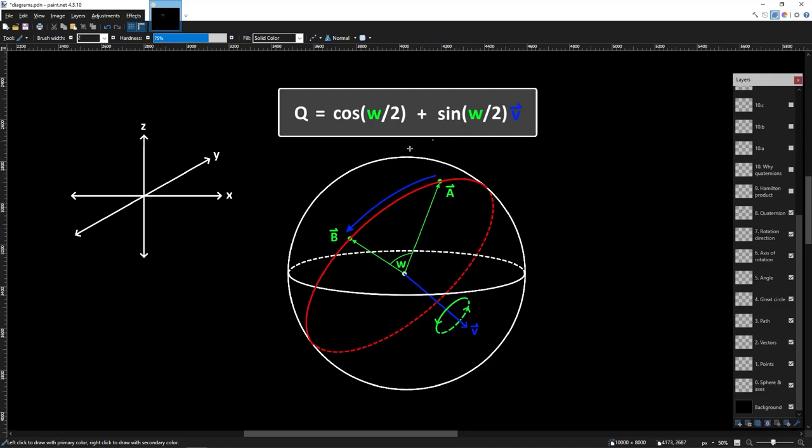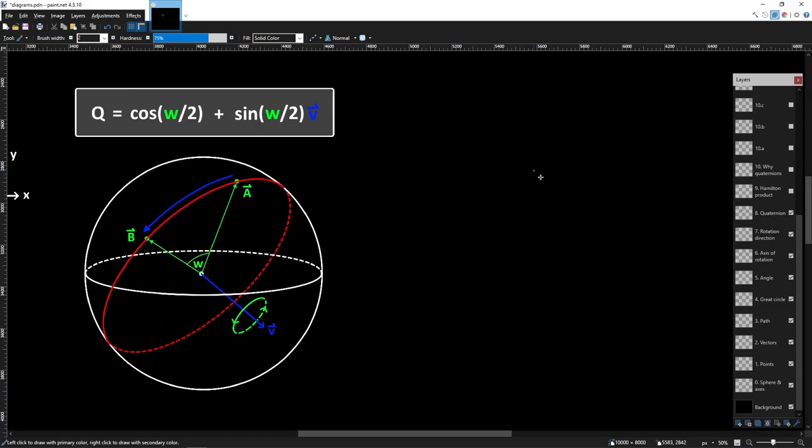Now if you want to know where the sine, cosine, and factor of half come from, I've left a link in the description to a post that explains this. So we have this quaternion that describes the rotation we want to do, but how do we actually use it? Well to do so, we apply it to both sides of our vector in this kind of quaternion sandwich that we call the Hamilton product. I'll spare you the exact details, but this just ends up being a lot of very basic multiplication and addition.